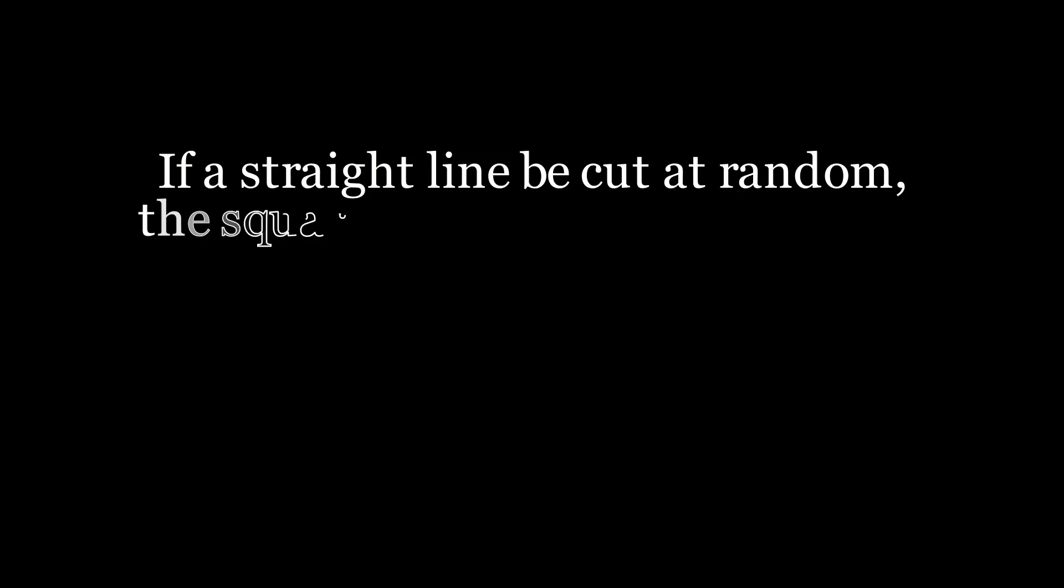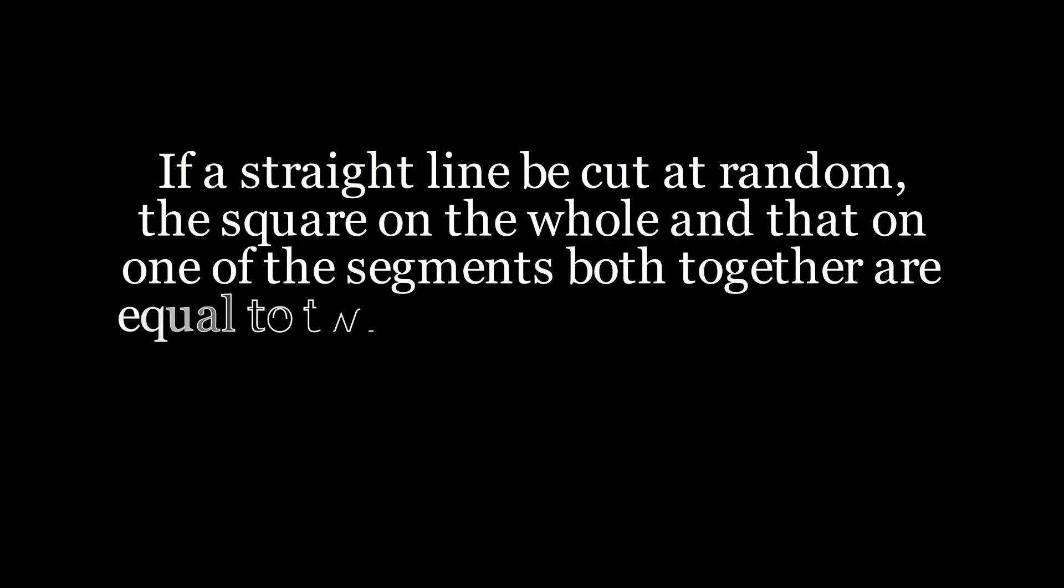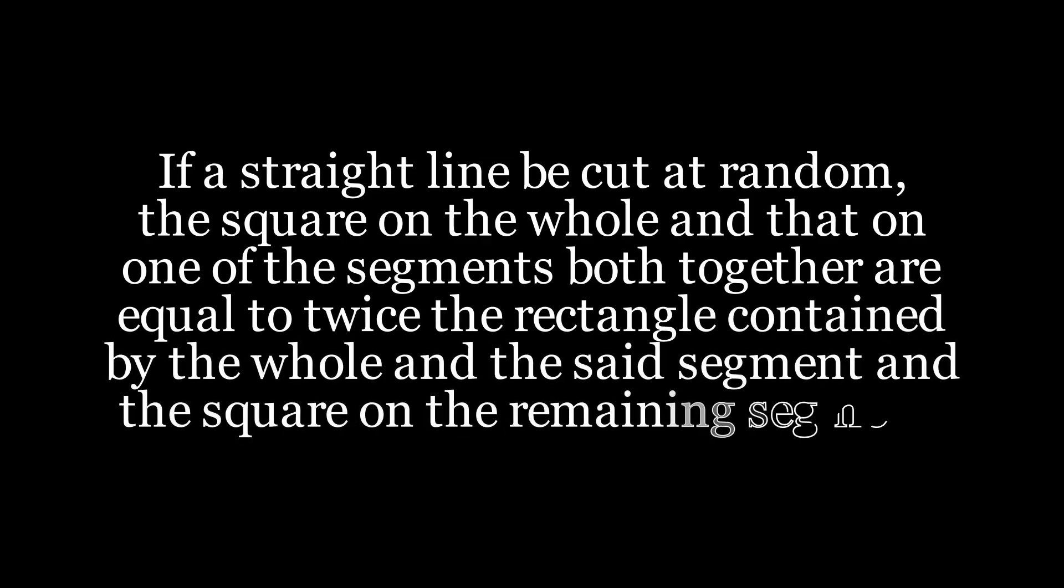If a straight line be cut at random, the square on the whole and that on one of the segments, both together, are equal to twice the rectangle contained by the whole and the said segment, and the square on the remaining segment.